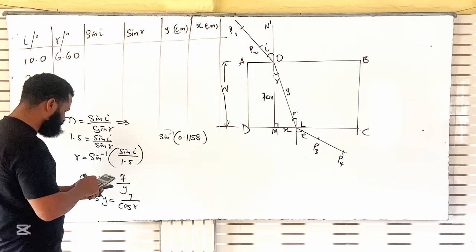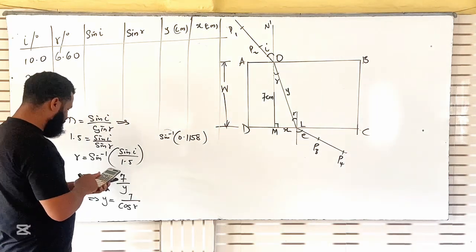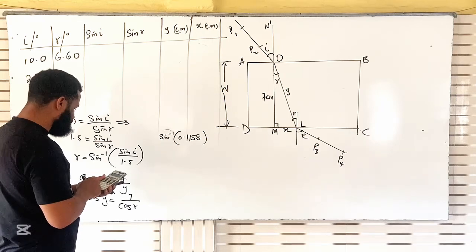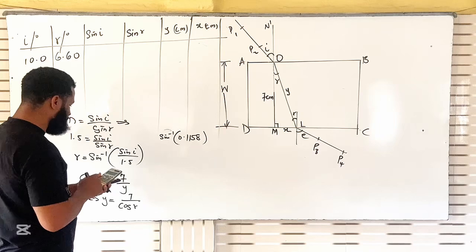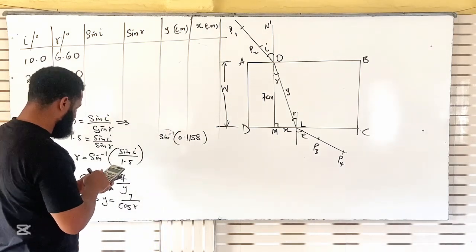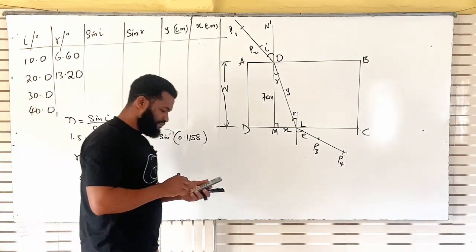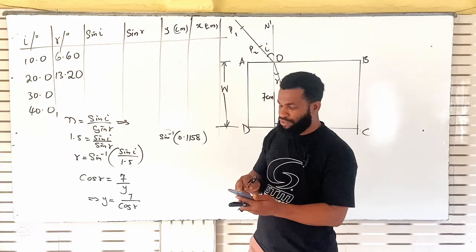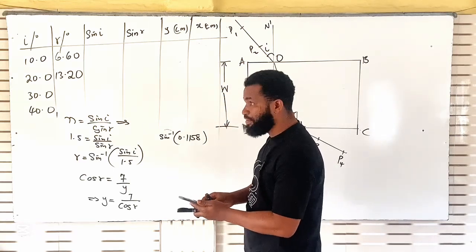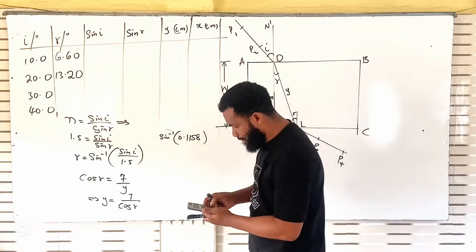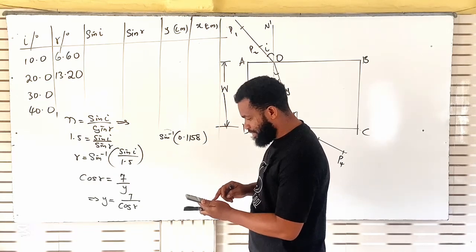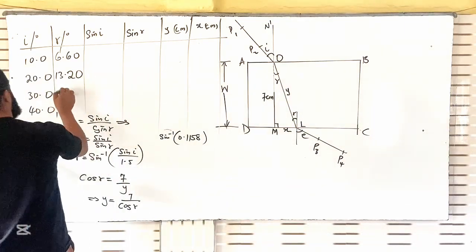For I = 20°: sine 20 divided by 1.5 gives 0.228. Sine inverse of 0.228 is 13.2°. For I = 30°: sine 30 is 0.5, and 0.5 divided by 1.5 gives 0.333. Sine inverse of 0.333 gives R = 19.5°.